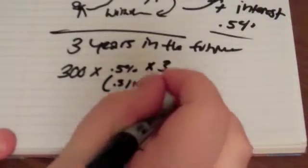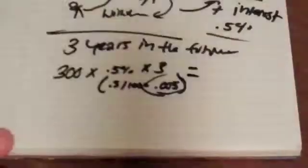And that would be, in your calculator, 0.5 over 100, which equals 0.005. Okay. And then you would multiply that by three, so this would be that number right there.